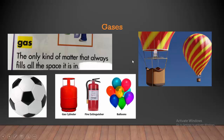And the third state of matter is gas. Here we have some examples of gas. The air inside this balloon is gas. Gas is around us — it's everywhere. The air inside this balloon is gas, and the air inside this ball is gas. We also have examples like a gas cylinder and balloons. This is the definition of gas: gas is the only kind of matter that always fills all the space it is in.